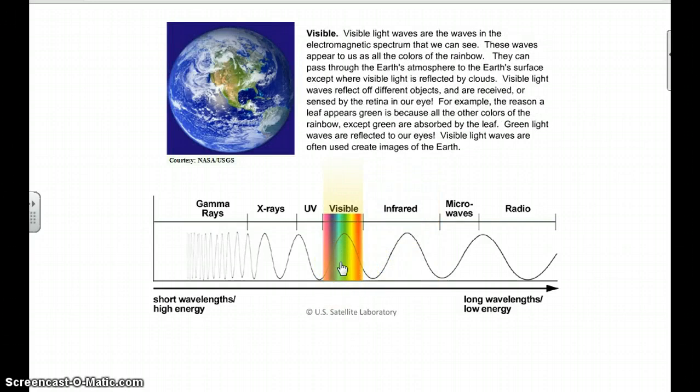Now we're getting into a little bit more energy. This is the only part that we see, the visible light. This is our ROY-GBIV, the red, orange, yellow, green, blue, indigo, and violet, the rainbow. This is the stuff that we see. The other ones we can't see. The reason a leaf appears green is because all the other colors of the rainbow except green are absorbed by the leaf, so the leaf is reflecting the green but absorbing every other color. Just like a red shirt, everything would be absorbing, but the red would be reflecting off.